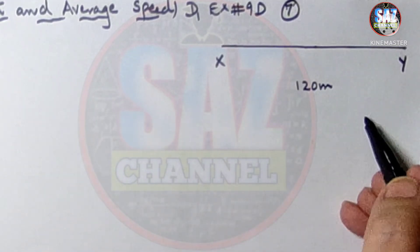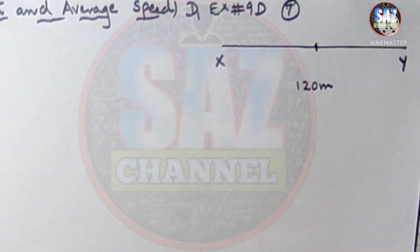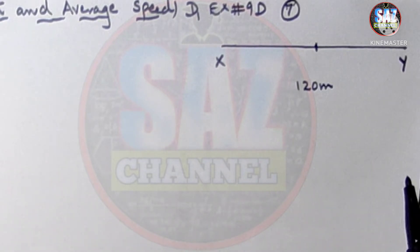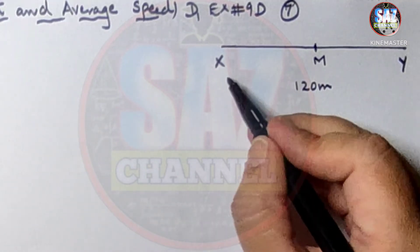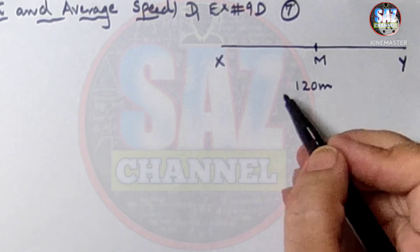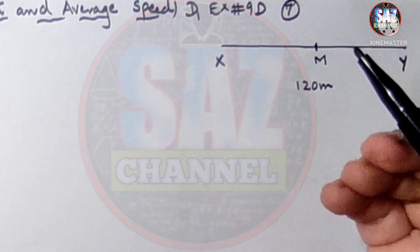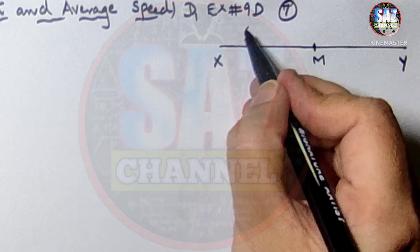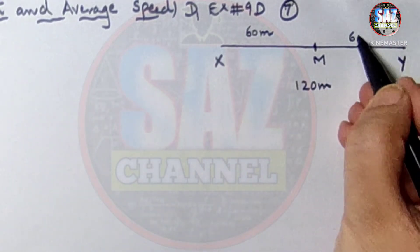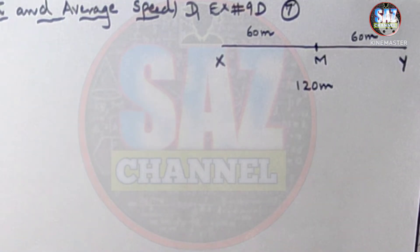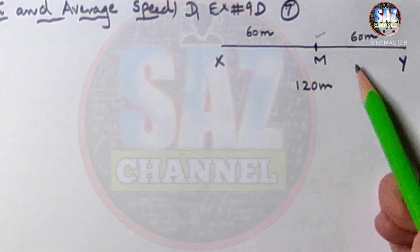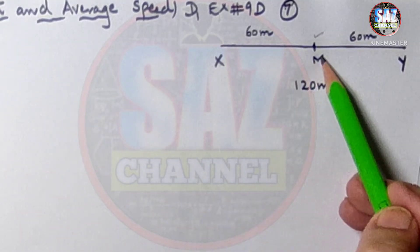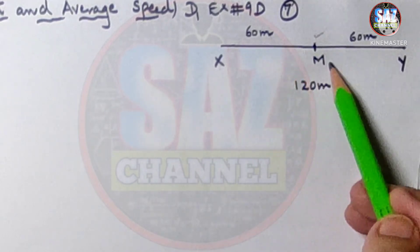M is the midpoint, and 'mid' means half. Think of perpendicular bisectors — they divide a line into two equal parts. So M is at the halfway point, meaning the distance from X to M is 60 meters, and from M to Y is also 60 meters. The midpoint divides the total 120 meters into two equal halves.